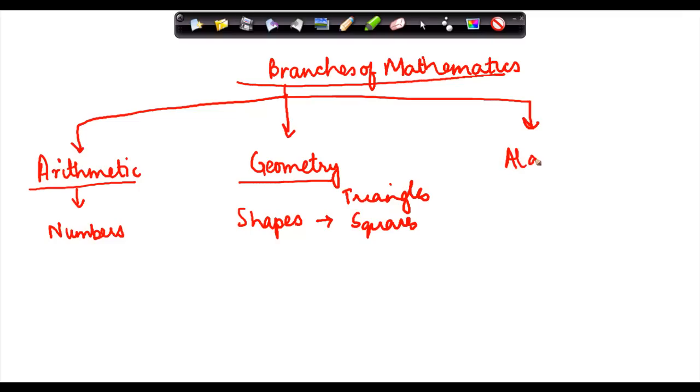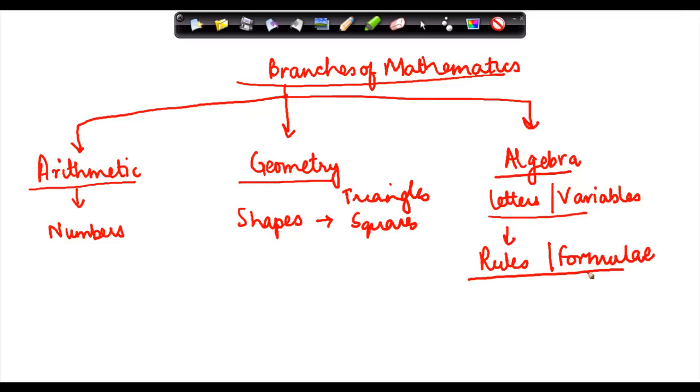And the third branch, which is relevant, is algebra. In algebra, what we do is that we study letters or variables. The idea behind studying these letters or variables is that we try to form certain rules and formulas. Now these formulas basically lay down certain rules which are universal.